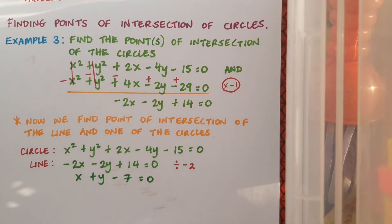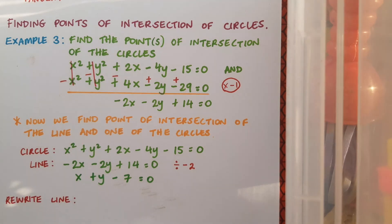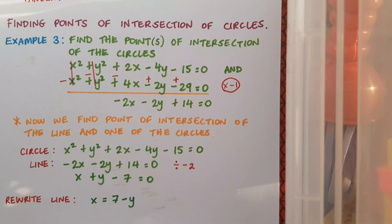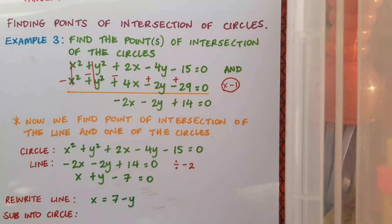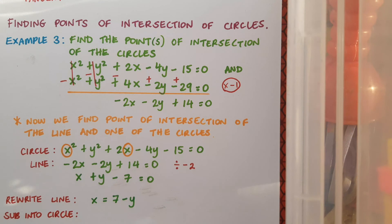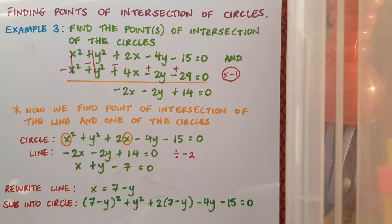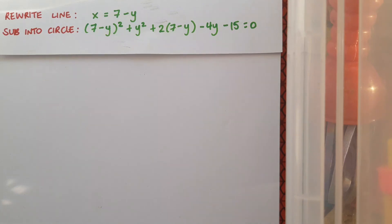Now I want to figure out where the circle and this line intersect. Pause the video and calculate this yourself. I'll rewrite the line equation and isolate x, getting x = 7 - y, and substitute this into the circle equation. Wherever there's an x in the circle equation I replace it with 7 - y. Take particular care when squaring out the bracket, and use rough work space if needed to multiply it out carefully. After fully expanding, I tidy up and expect a quadratic.